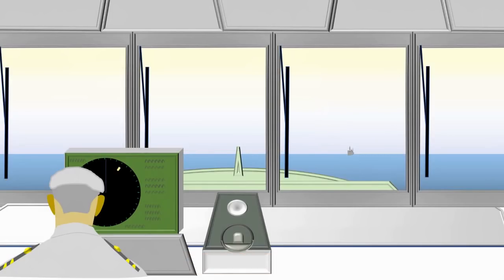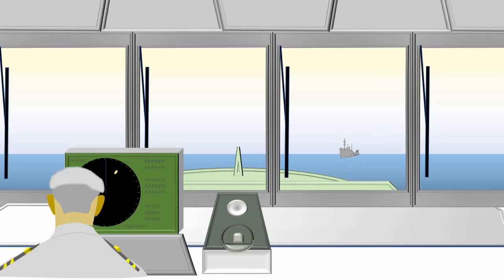The officer of a ship sees on his radar the paint of one target coming close. However, as the target draws near, he sees visually that there are two vessels, and not one as the paint on the radar screen was suggesting. How did this happen? Did his radar go faulty? Or are there inherent limitations of the radar technology that the officer should know before he uses a radar?